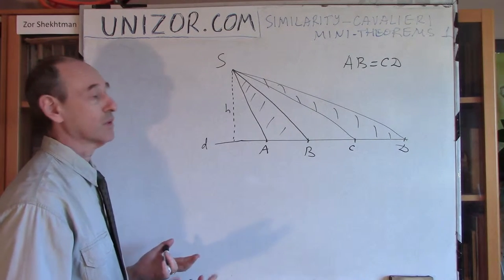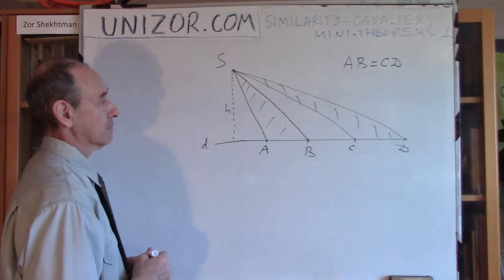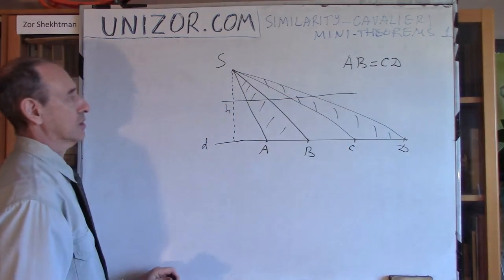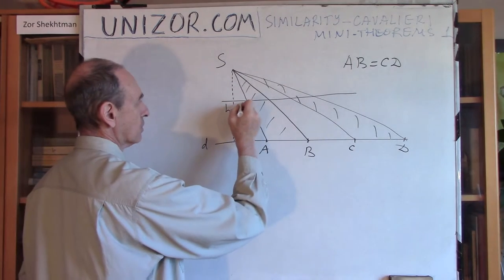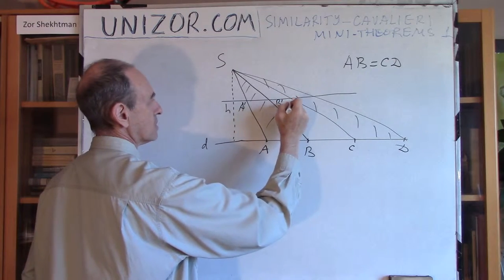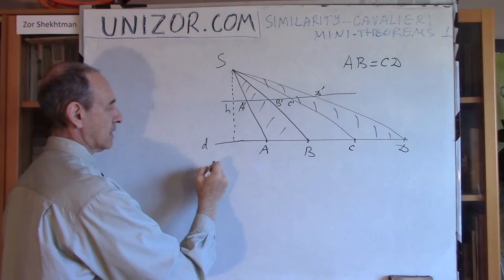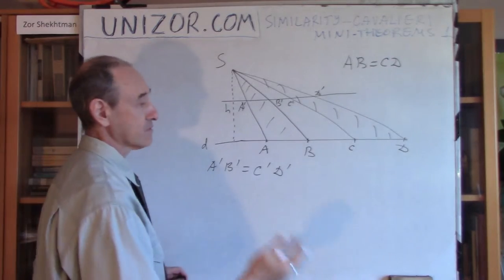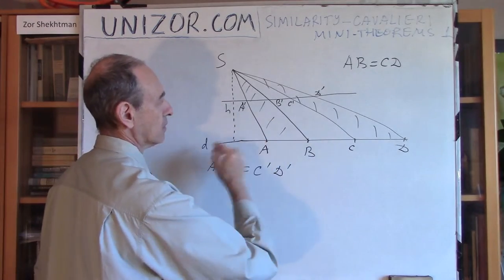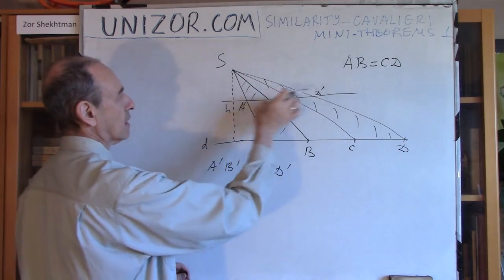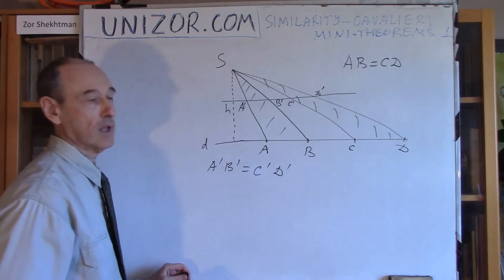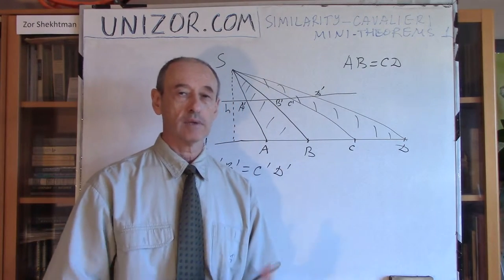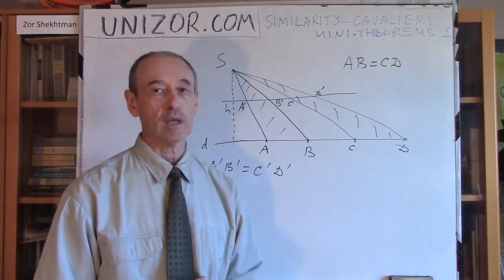The base line is obviously the line where both bases of the triangles lie. Let's draw any line that crosses both triangles and call the intersection points A prime, B prime, C prime, and D prime. I need to prove that A prime B prime equals C prime D prime. If I prove that, then every line parallel to the base cuts equal segments — that is the premise of the Cavalieri Principle — and the areas will be the same.